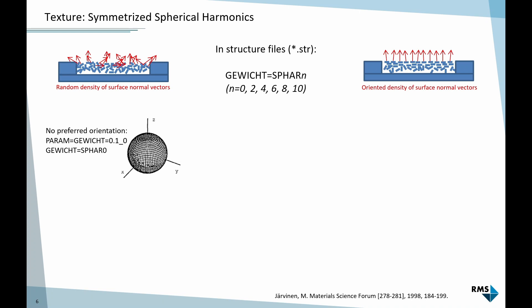If we set SPHAR to 0, we disable texture refinement. We assume the same number of crystals pointing in each direction of space. We get a density distribution that is spherical, same number of crystals pointing in each direction.